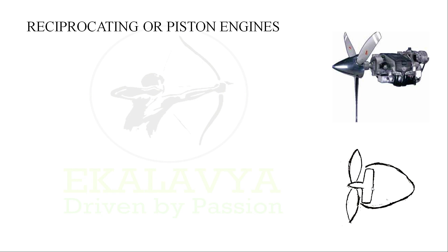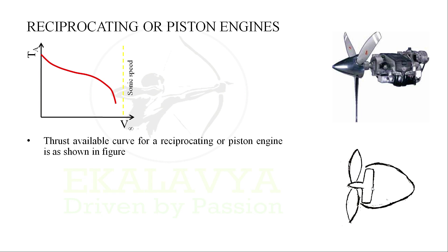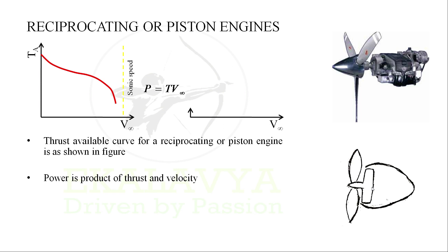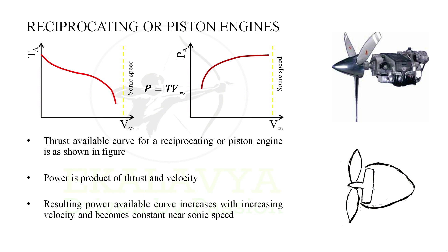The diagram of reciprocating or piston engines can be simplified as shown. The thrust available curve for a reciprocating or piston engine is as shown in the figure. We know power is a product of thrust and velocity. On multiplying velocity to thrust available at each point, we get corresponding points of power available, and by plotting it we get the power available curve. We see that the resulting power available curve increases with increase in velocity and becomes constant near sonic speed. At near-sonic speeds, the tips of propeller blades encounter compressibility problems, so propeller engines usually don't fly above sonic speeds.